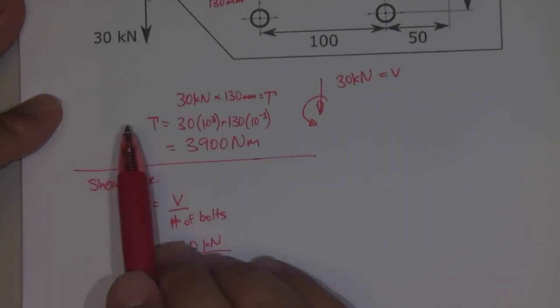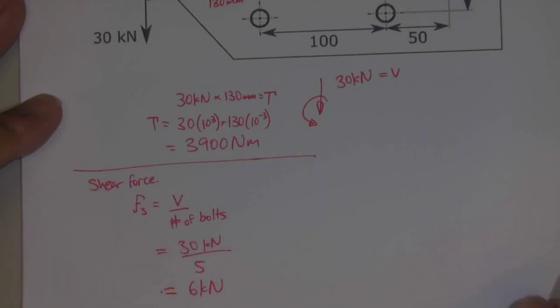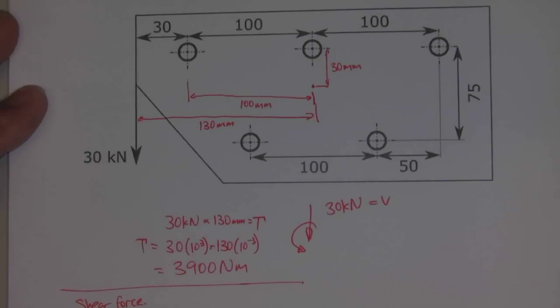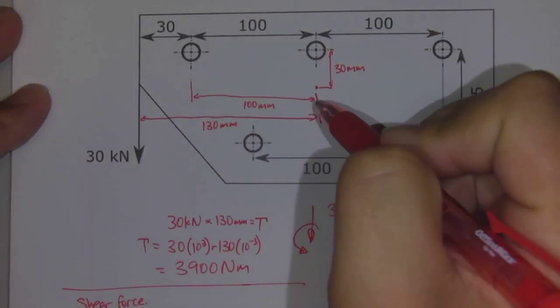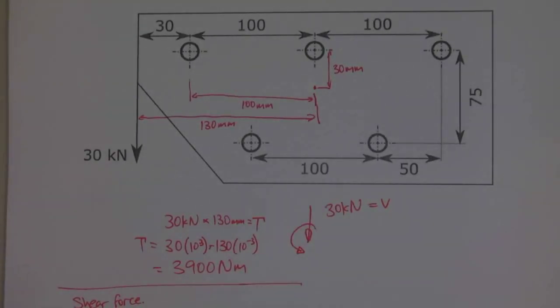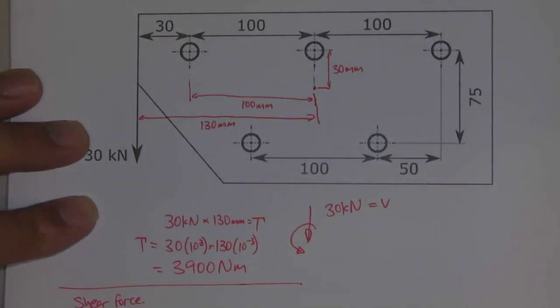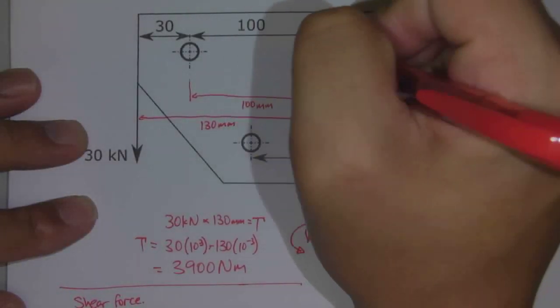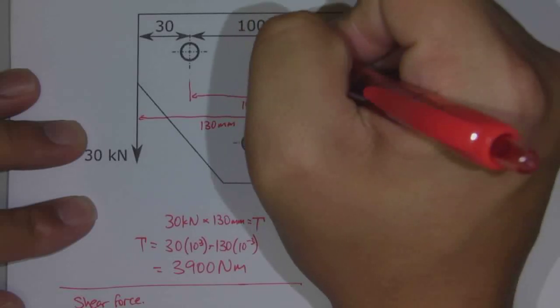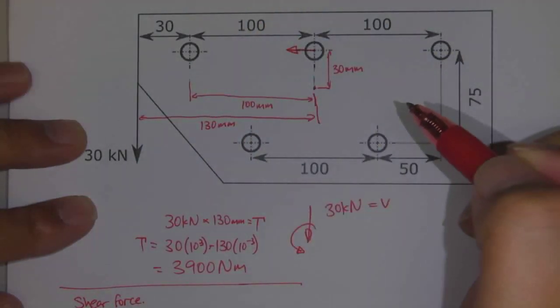The second thing we should look at is the force applied onto each bolt due to the torque. When we apply this torque onto each section, there will be a tendency 90 degrees to a radial line to each one of these bolts.